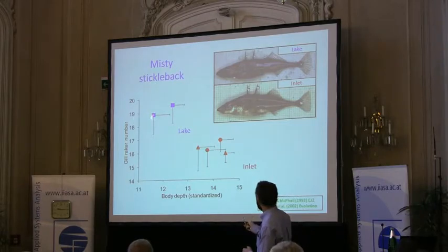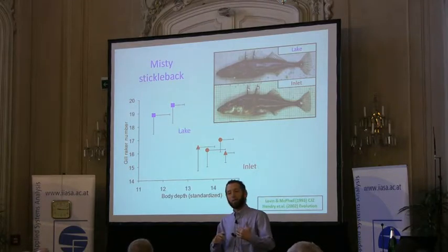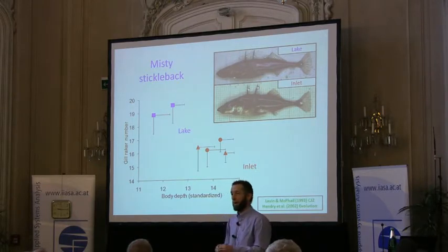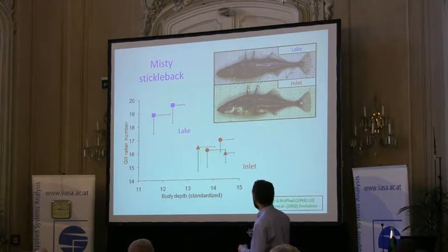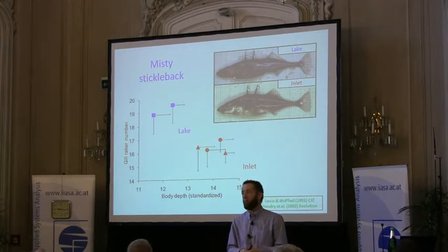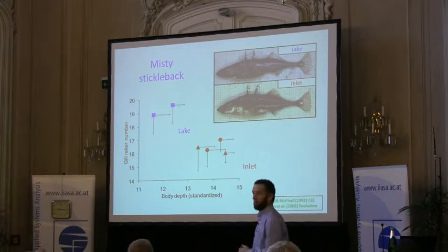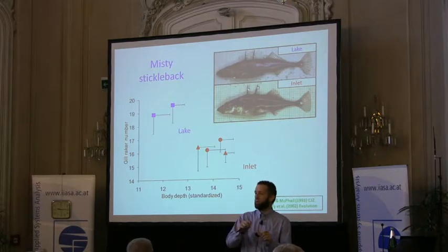Looking at samples from the lake across different years, and samples from different years and locations in the inlet stream, you see these traits differ repeatably, predictably, and strongly in ways we would expect to be adaptive. You have more gill rakers in the lake where fish feed more often on zooplankton, and fewer in the stream where they feed on larger benthic macroinvertebrates. There's also large divergence in body shape: inlet fish are deeper-bodied for a given length than lake fish.